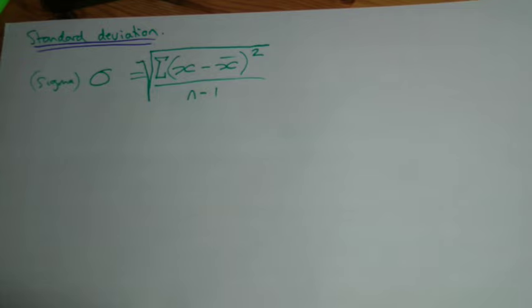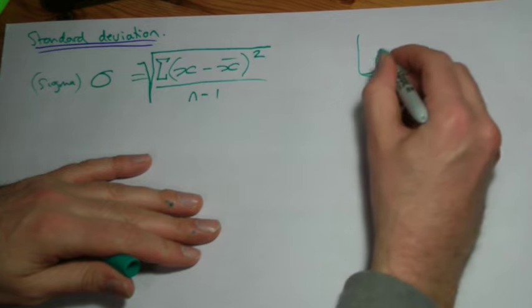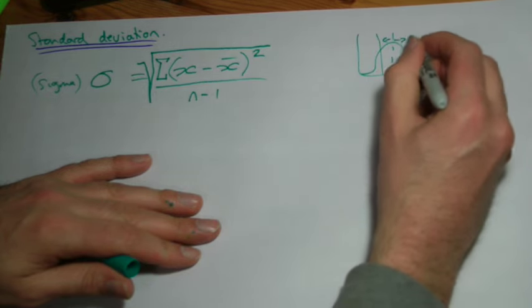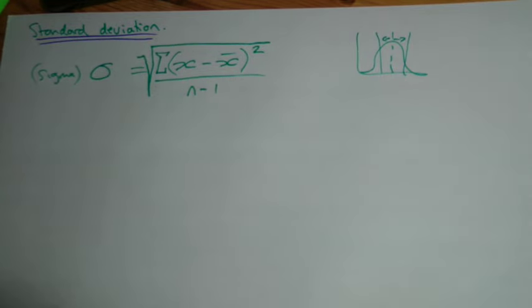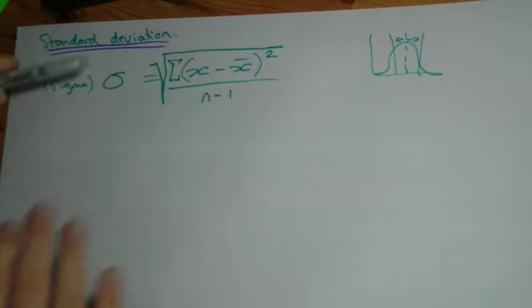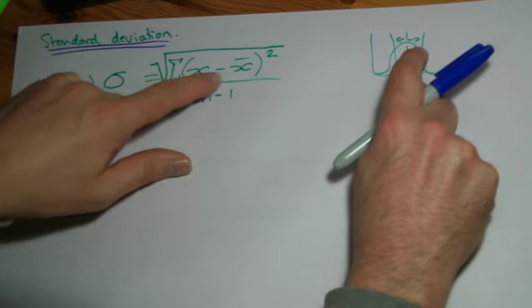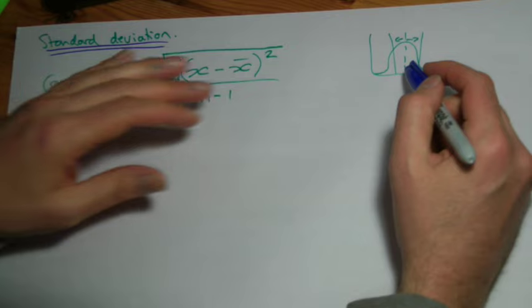Now standard deviation is, as we said on the video about normal distributions, it's a measure of how spread out things are. One standard deviation either side or two, or whatever it would be. It's a way to calculate how spread out your data is. I suppose really what it's doing is it takes every value you have and compares it to how far away from the mean it is.